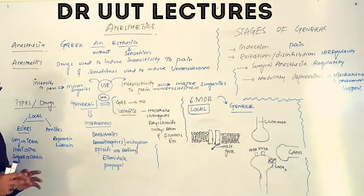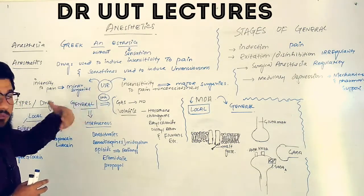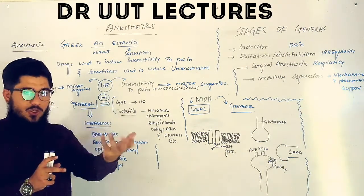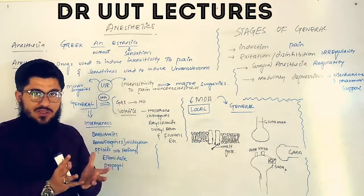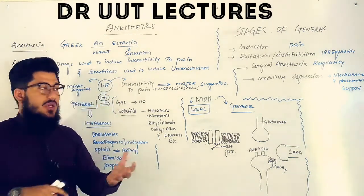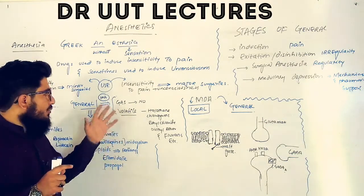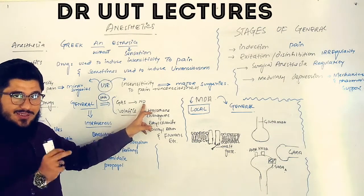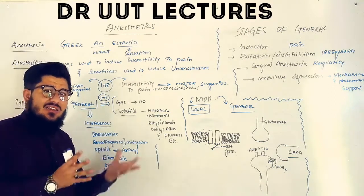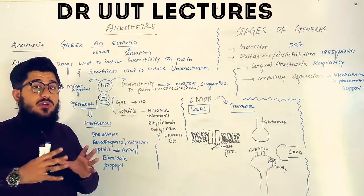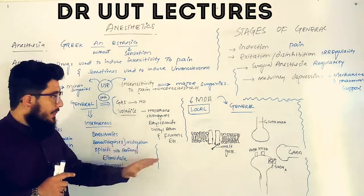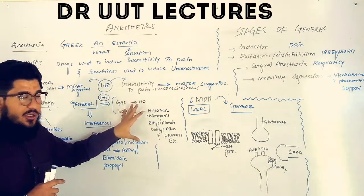For general anesthetics, inhalational agents are further divided into gases and volatiles. A gas is a state of matter in the gaseous phase; a volatile compound converts into vapors at room temperature. The gas example is nitrous oxide. Volatile examples include halothane, chloroform, ethyl chloride, diethyl ether, and fluorenes such as desflurane.